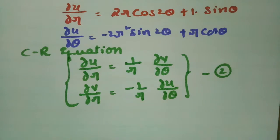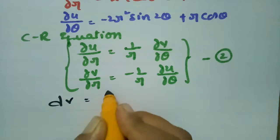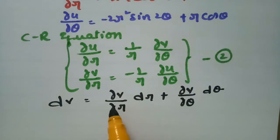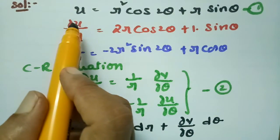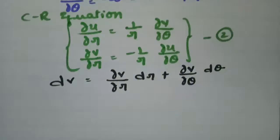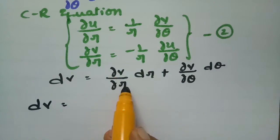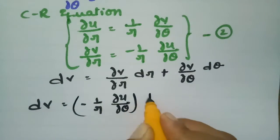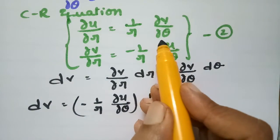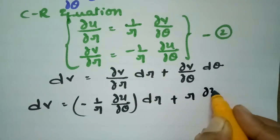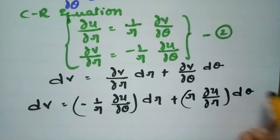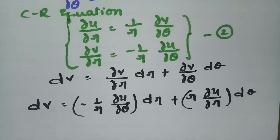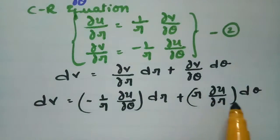I will use these CR equations to find the analytic function. We write dv = (∂v/∂r)dr + (∂v/∂θ)dθ. I have the values of u. I am going to transform v into u using the CR equations. So dv = (-1/r)(∂u/∂θ)dr + r(∂u/∂r)dθ, since I have ∂u/∂θ and ∂u/∂r values ready.